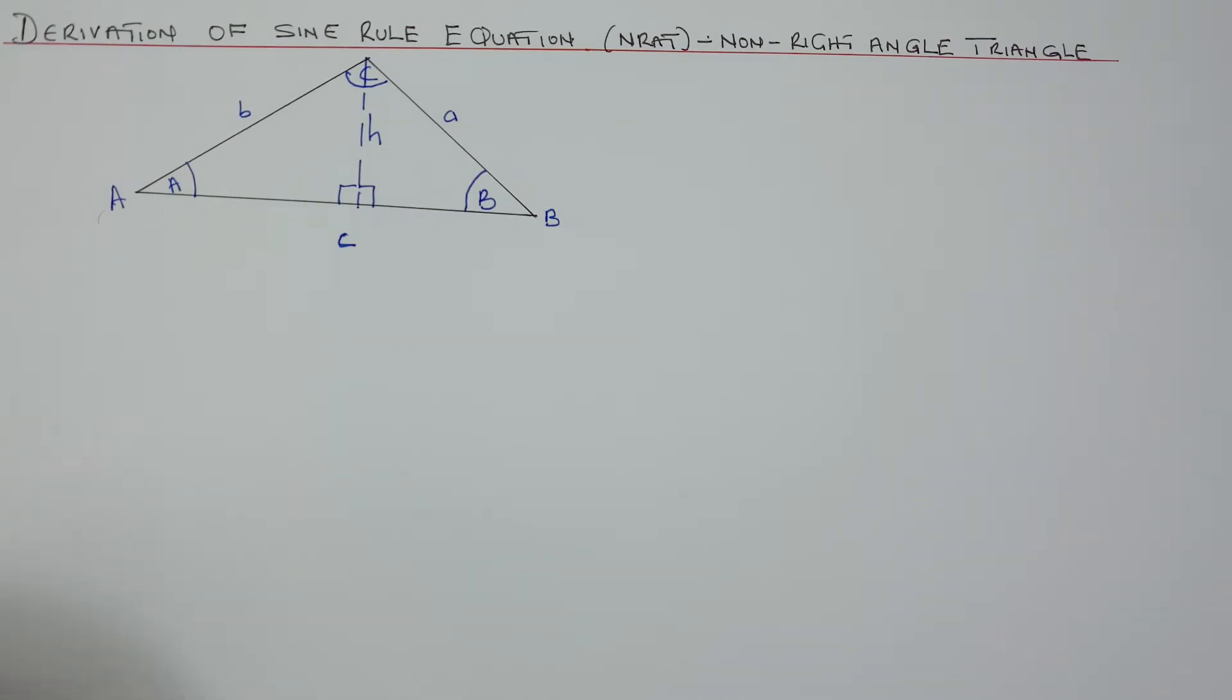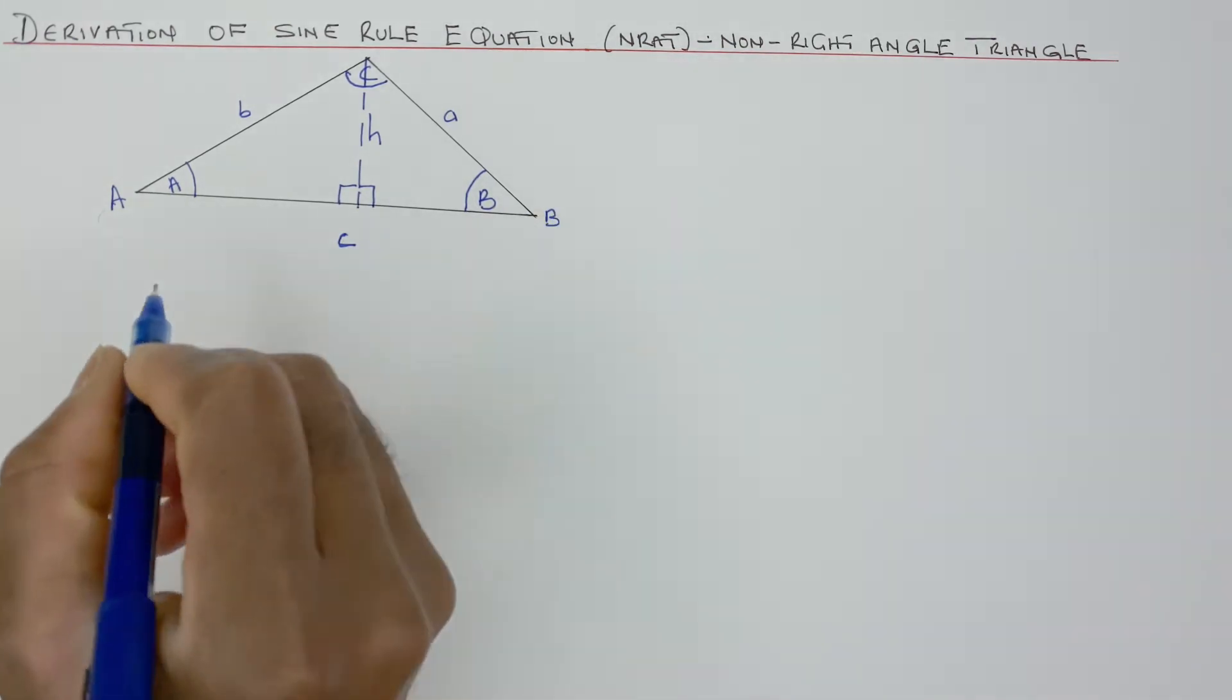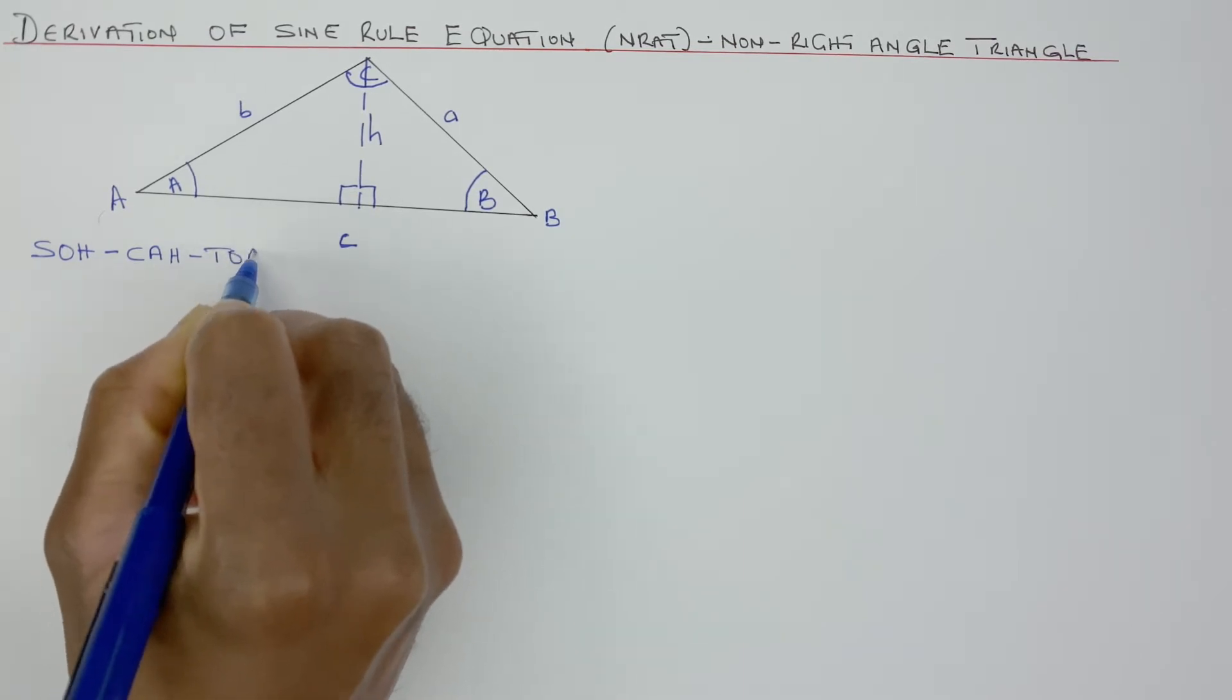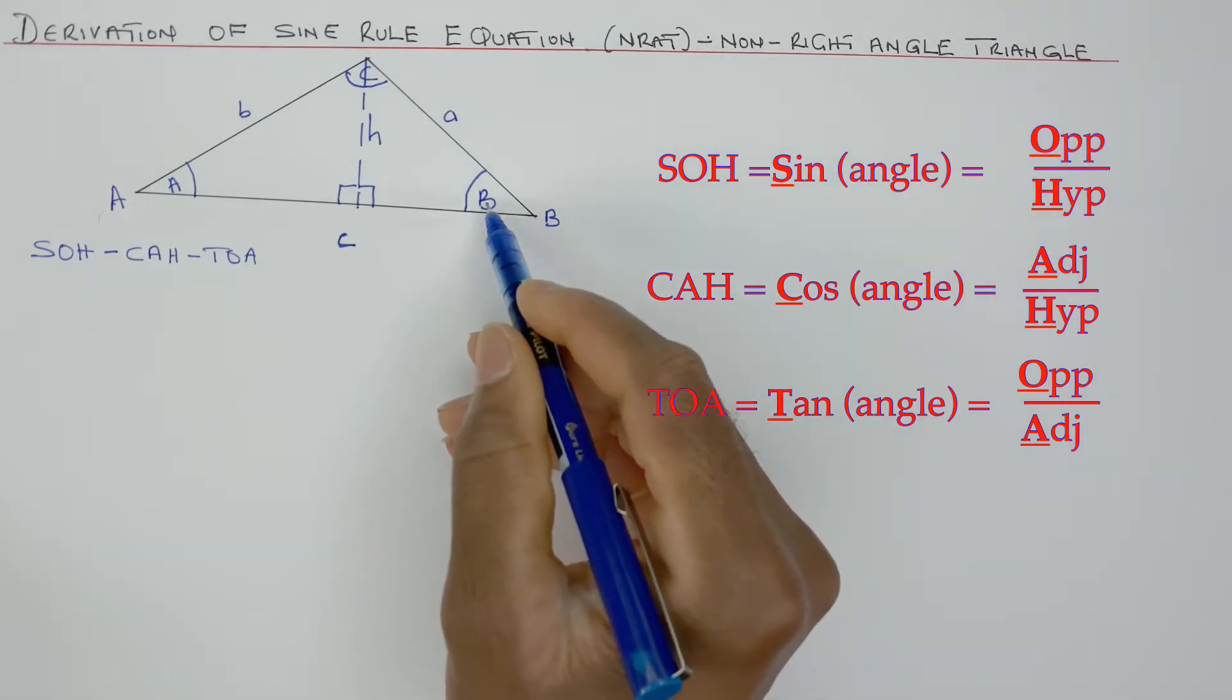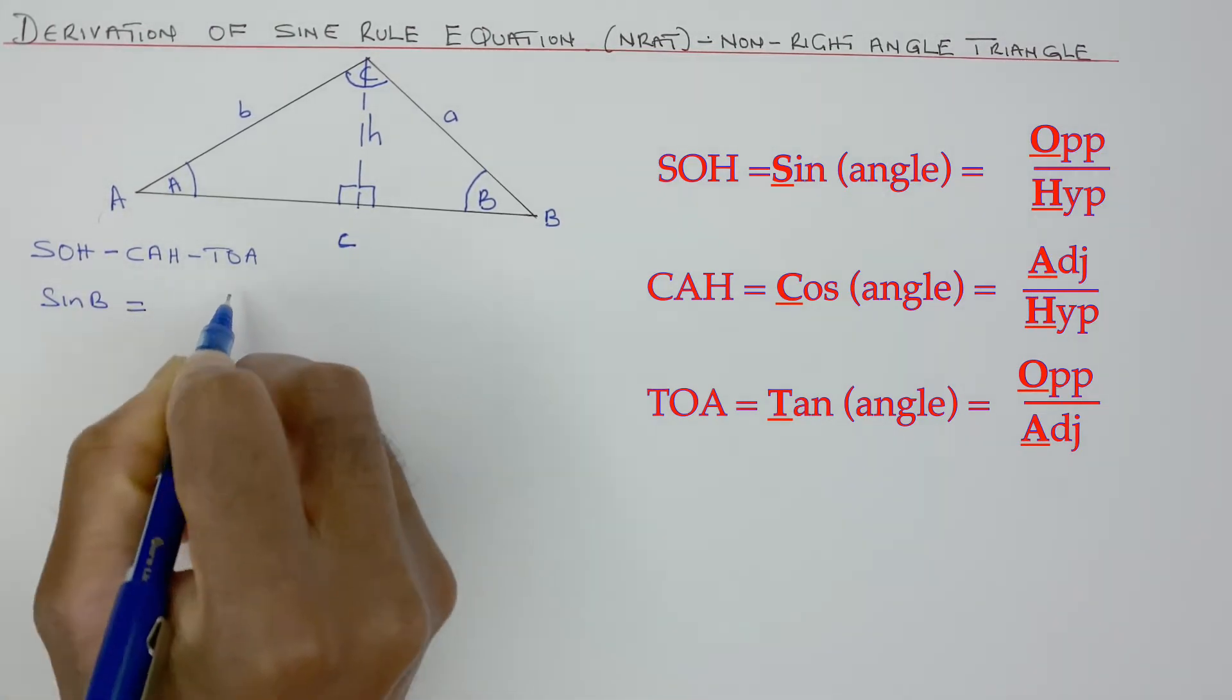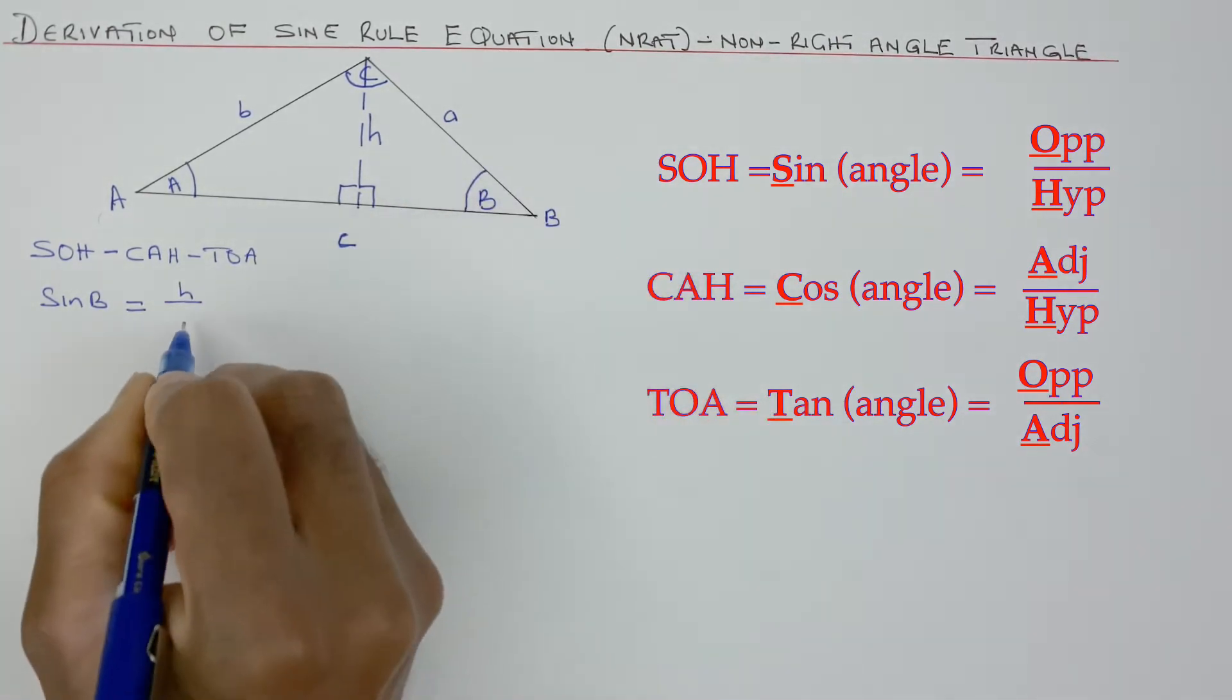To find angle B, I'm going to use something called SOHCAHTOA. Sine is opposite over hypotenuse. So my opposite here would be H. So I could write sine of angle B equals opposite H over hypotenuse. Hypotenuse is A.